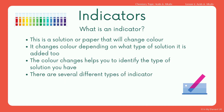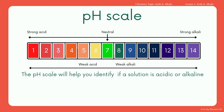When using universal indicator, you add the drops to your substance that you want to identify, and then you match it to the pH scale. The advantage of using universal indicator, along with a couple of others, is that you can identify the strength of the substance as well.